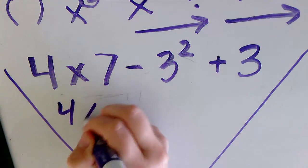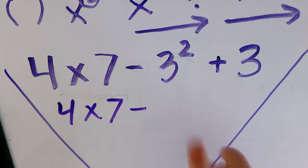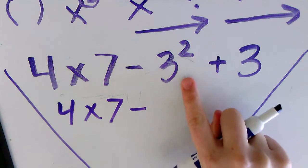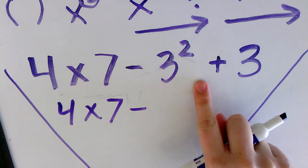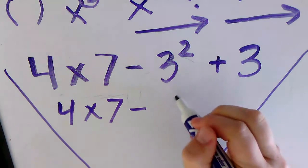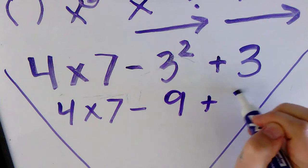I have 4 × 7 that I'm going to bring down, minus—now I need to solve this. 3 to the power of 2 is the same as 3 × 3, so this number is 9, plus 3.